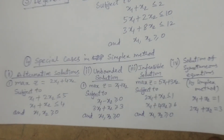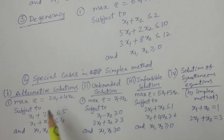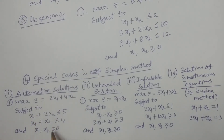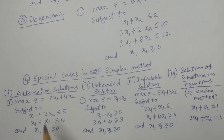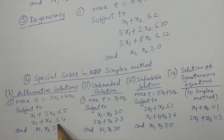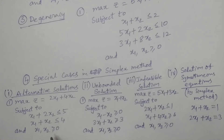Unit 3 also covers special cases. First is the alternative solution — a linear programming problem which has more than one solution. Since all constraints are ≤, we apply the simplex method. By solving it, you will get two solutions. If a non-basic variable has a net evaluation of 0, you bring it into the basis and solve again to get the alternative solution.